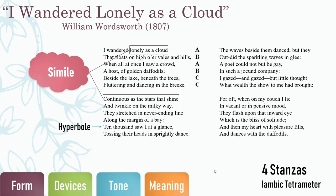Another important device is personification. When the speaker gives human traits to inanimate objects, it's really significant because it shows that man and nature aren't as far apart as they seem. The daffodils are dancing and fluttering, which makes them seem jovial and excited. They're also tossing their heads in a sprightly dance, while the waves dance beside them, reflecting the happiness of the daffodils. And in the end, the speaker's heart actually dances with the daffodils, showing that his own emotions reflect the beauty and buoyancy of the scene around him.